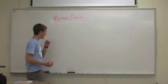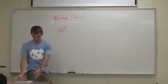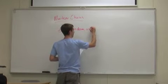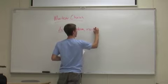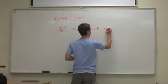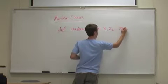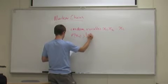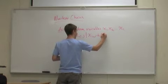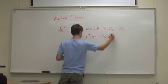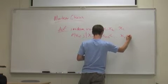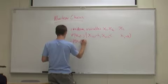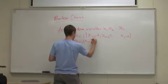The definition for a Markov chain is: you have a set of random variables x1 to xn, where the probability that xn equals j, given that xn-1 equals k, xn-2 equals i, dot dot dot, all the way down to x1 equals v, is equal to the probability that xn equals j given xn-1 equals k.